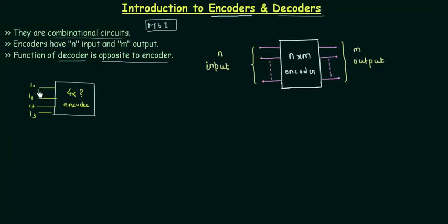But a single input will be high for each and every case. Then what is the need to just use these 4 data lines if a single input is high? You already know that if there are 4 inputs I can have 2 bits to represent them. I0 can be represented as 00, I1 is 01, 10 and then 11. So instead of having 4 data lines I can have 2 data lines.